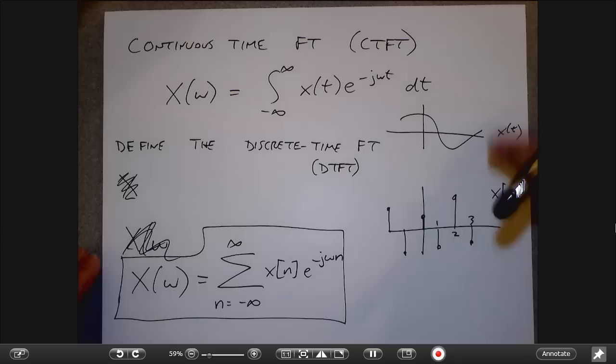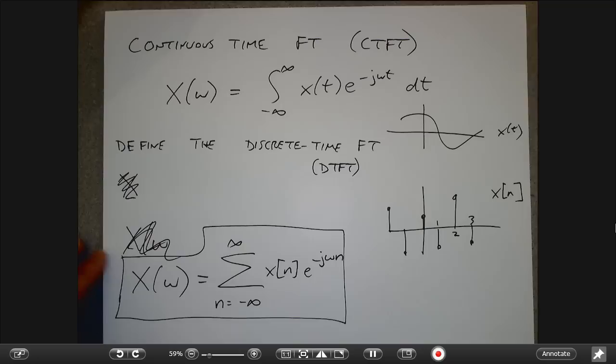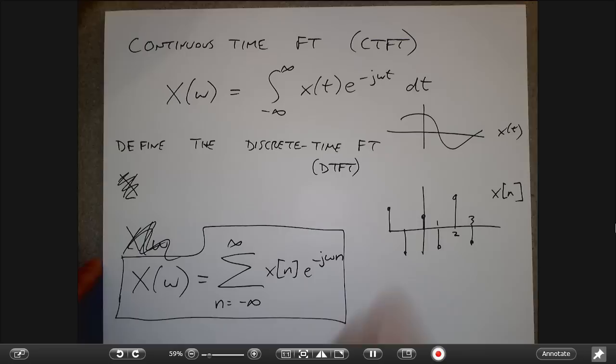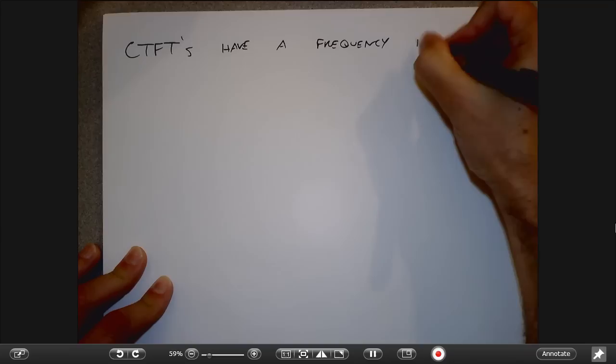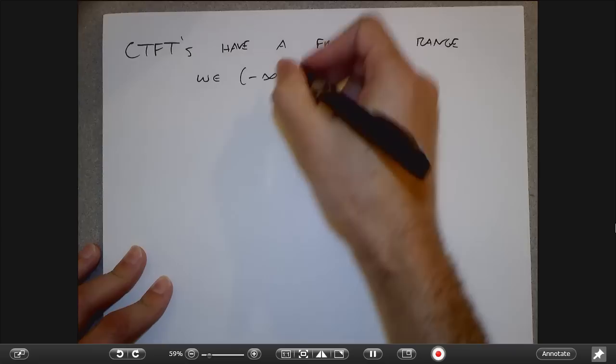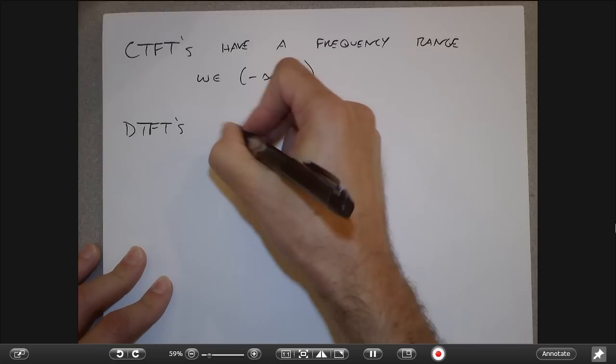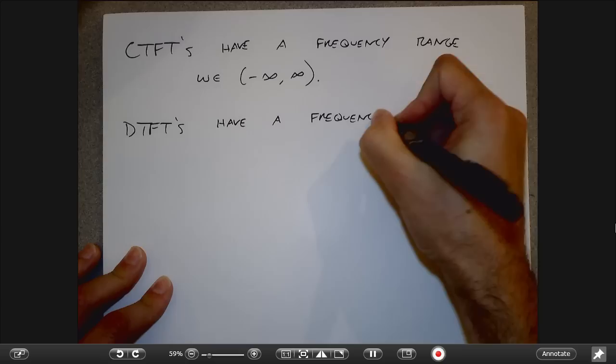As I alluded to on the first couple days of class, there is a difference. For the continuous time Fourier transform, we can have frequencies that are arbitrarily high — we can make cosines that are arbitrarily wicked, 5,000 Hz, 10,000 Hz, 100,000 Hz. But in discrete time, it turns out we only have a fixed set of frequencies. Continuous time Fourier transforms have a frequency range that is essentially unlimited, but discrete time Fourier transforms have a frequency range of width 2π.